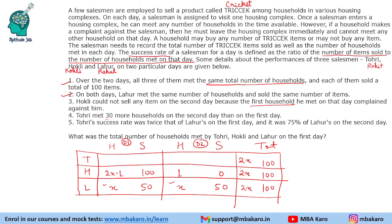Tohuri also meets a total of 2X households. It is given that Tohuri met 30 more households on the second day than on the first day. So if Day 1 is Y, then Day 2 is Y plus 30. This gives 2Y plus 30 equals 2X, so Y equals X minus 15. Therefore, on Day 1 he meets X minus 15 people, and on Day 2 he meets X plus 15 people.